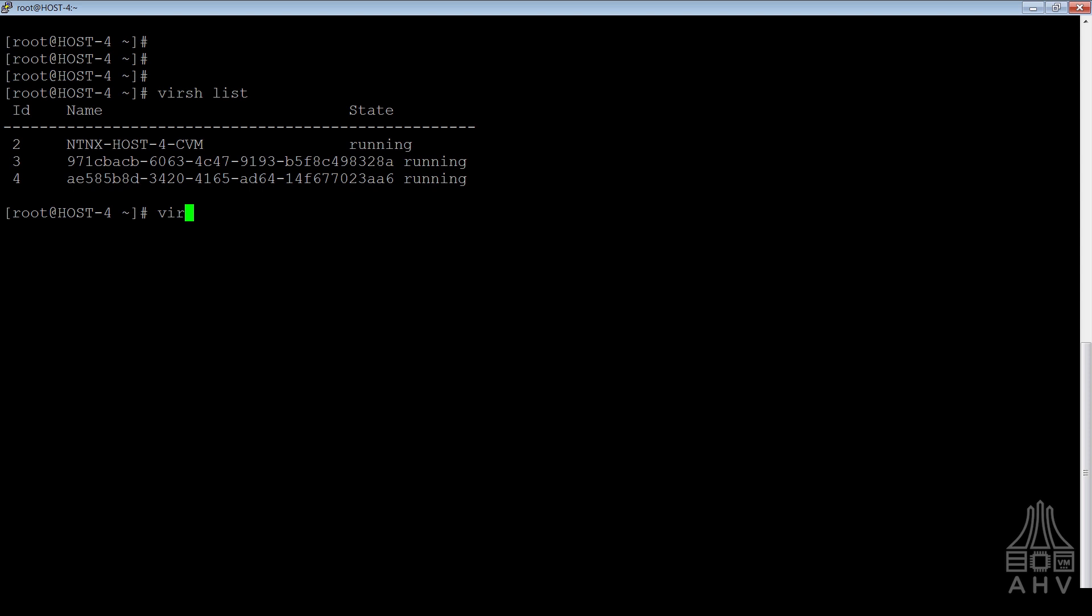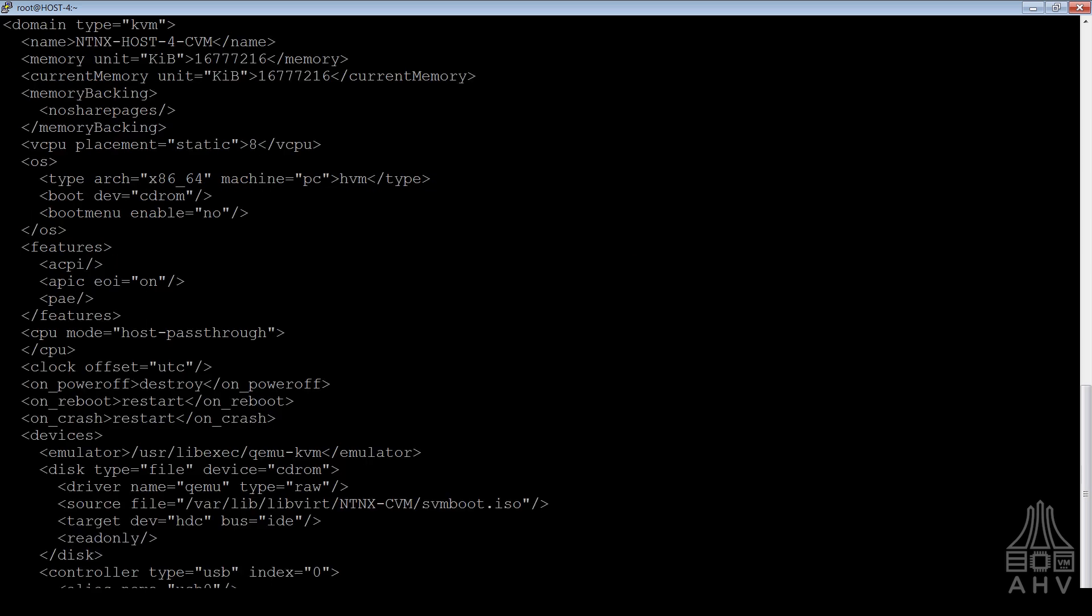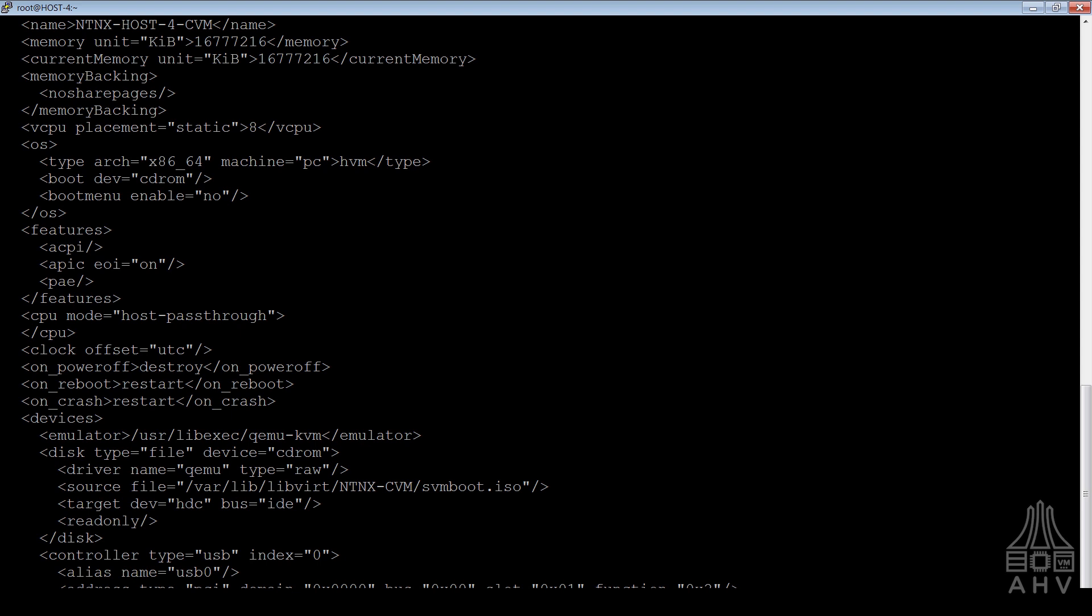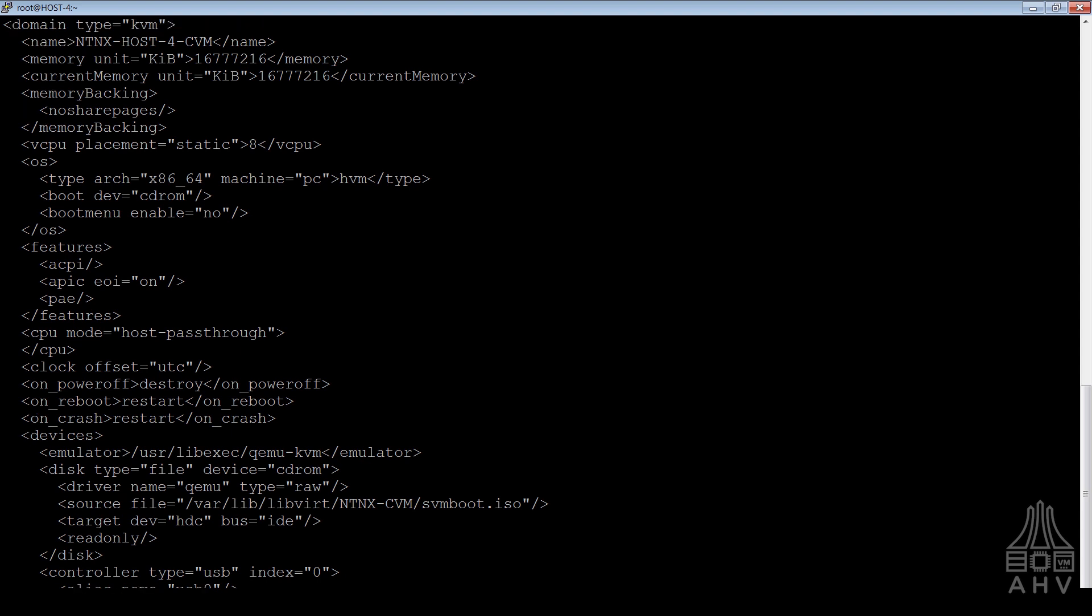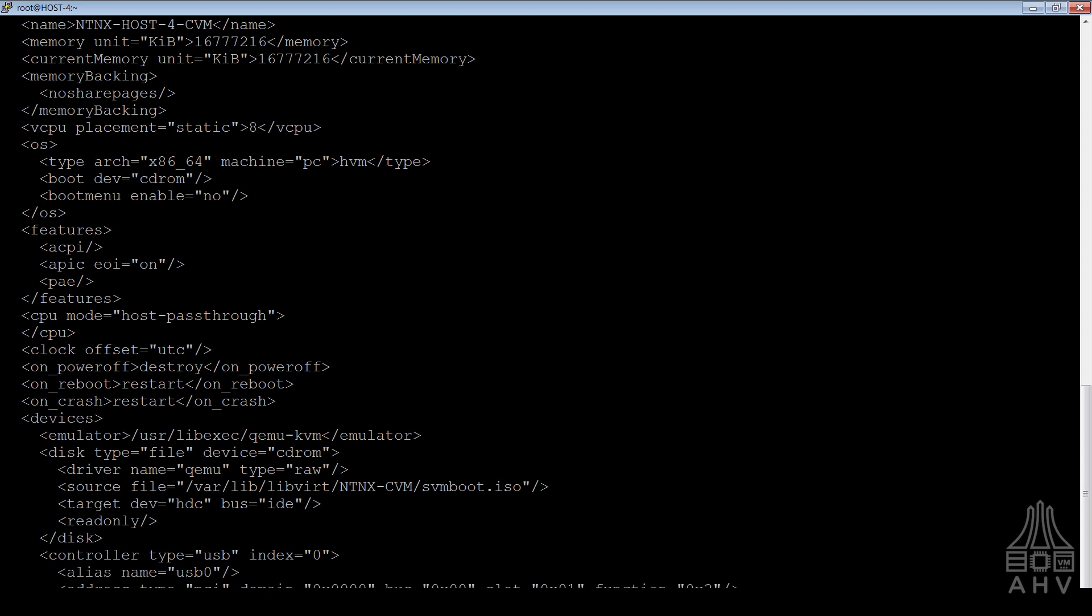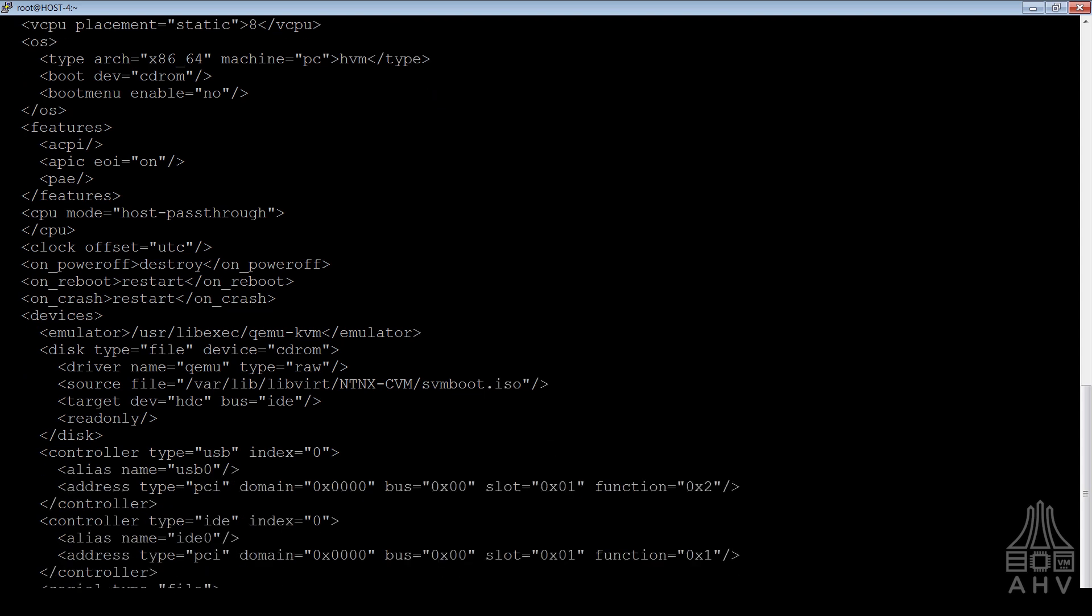Also, if you're logged into the host, you can view aspects of the CVM itself by looking at the XML file. So what I'm going to do here is a less against the CVM XML file. And you can see here that different properties of the CVM are listed here. You can see that we have the memory defined here and a lot of other different properties associated with the VM.